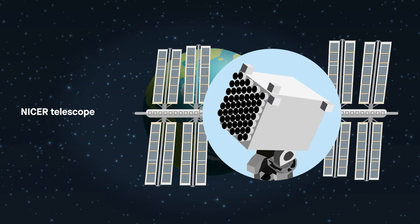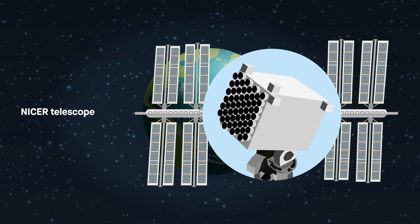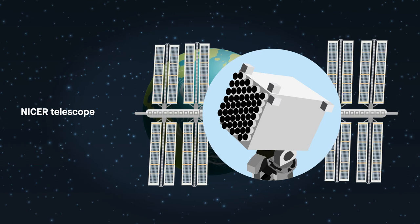Located aboard the International Space Station, the NICER telescope captured data from the Crab Pulsar over three years with the help of ground-based telescopes in Japan.